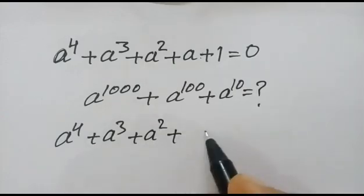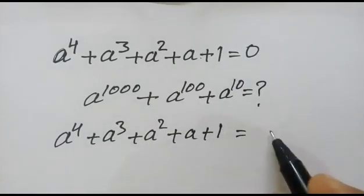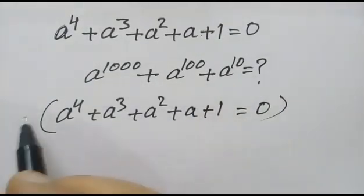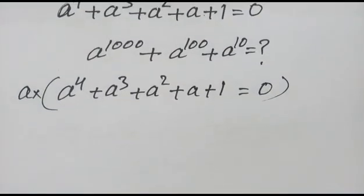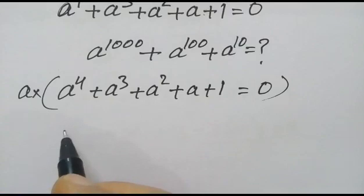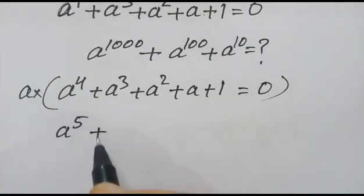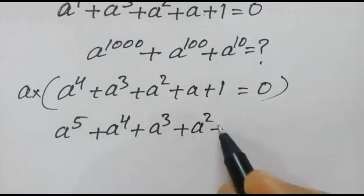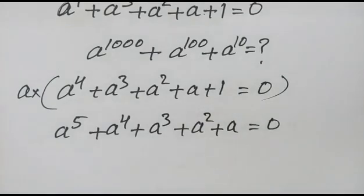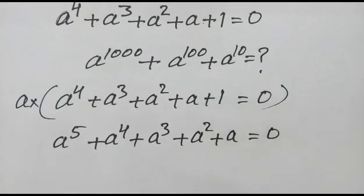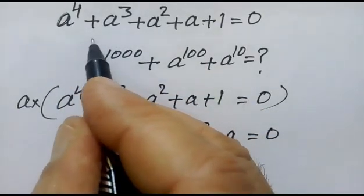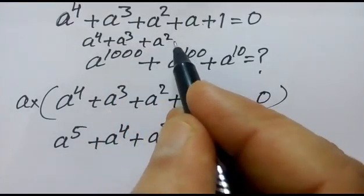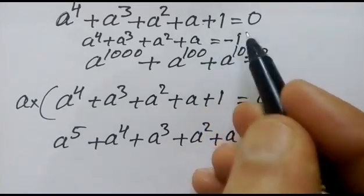So first, a⁴ + a³ + a² + a + 1 = 0. If we multiply the whole equation by a, we get a⁵ + a⁴ + a³ + a² + a = 0. As we have been given the original equation, we can write a⁴ + a³ + a² + a = −1.